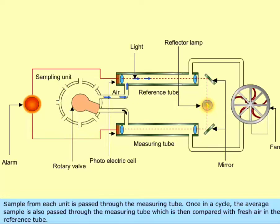Sample from each unit is passed through the measuring tube. Once in a cycle, the average sample is also passed through the measuring tube, which is then compared with fresh air in the reference tube.